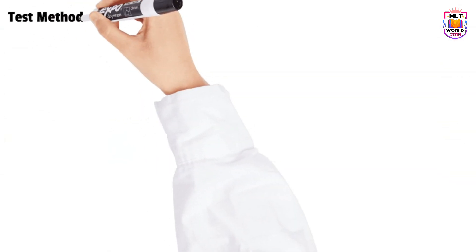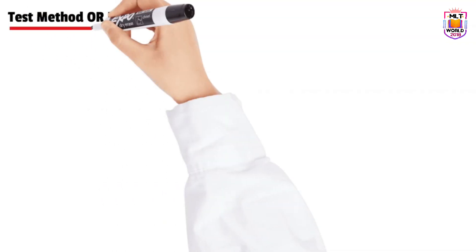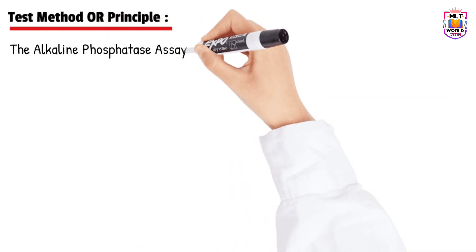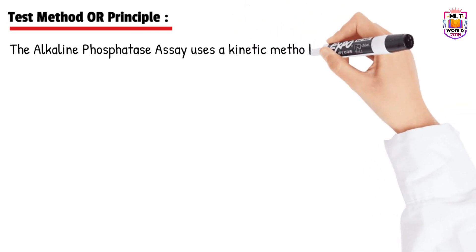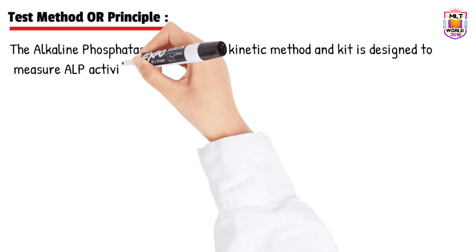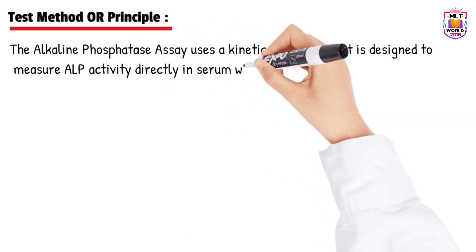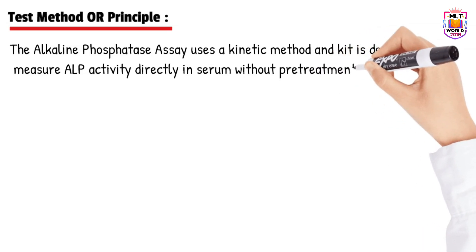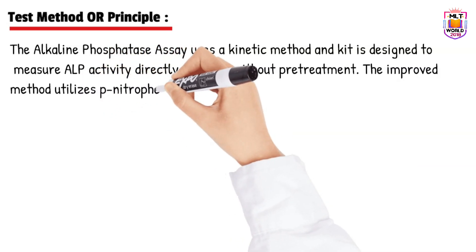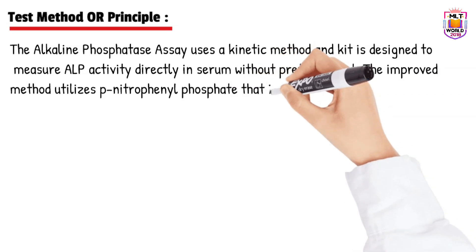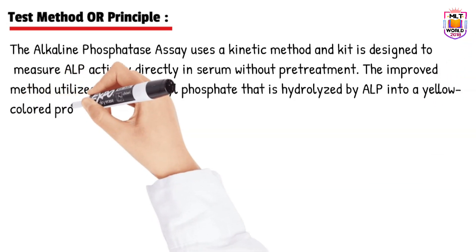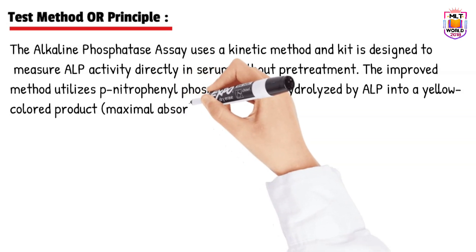Now we will see the test method or principle. Alkaline phosphatase is a kinetic method test. The kit is designed to measure ALP activity directly in the serum without any pretreatment — just keep the serum and reagent and the machine will perform the test. In the improved ALP method, it utilizes p-nitrophenyl phosphate, which is hydrolyzed by ALP into a yellow color product.